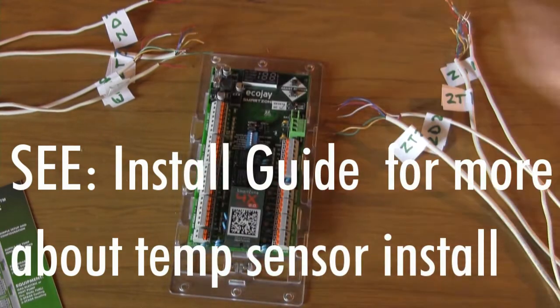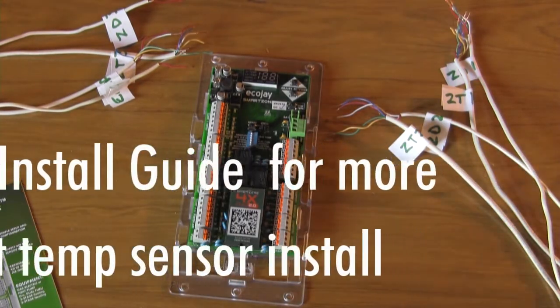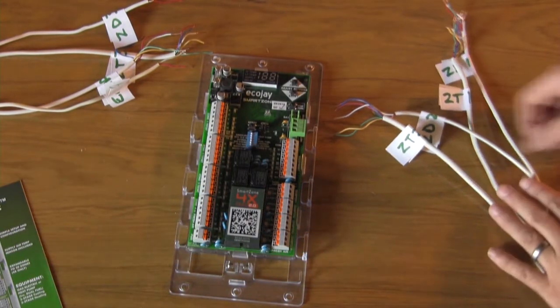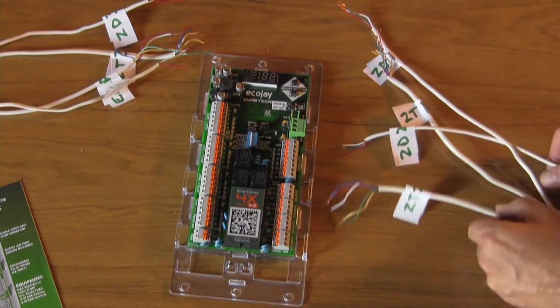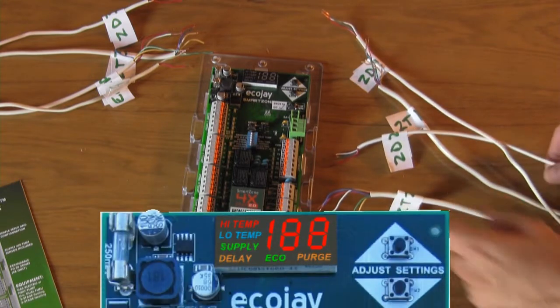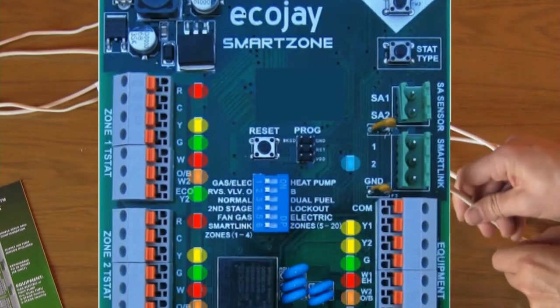Once the SmartZone board has been mounted, you can begin reconnecting the wires. Some of them plug in on different sides of the board so you may have to reroute some of the wires.